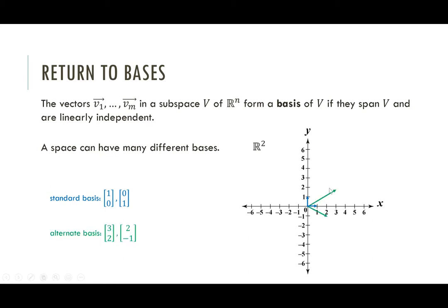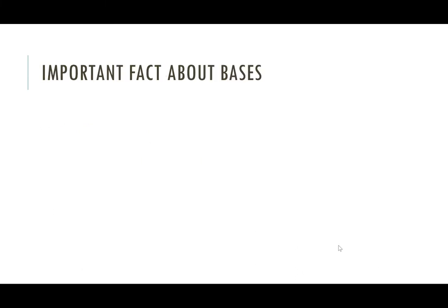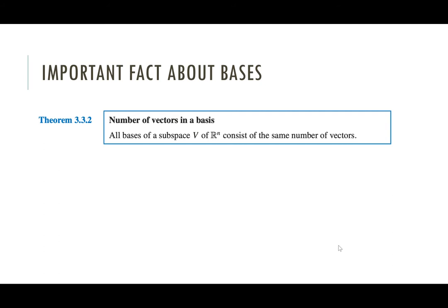So long as you have two vectors that are independent from each other — not pointing in the same direction — you can use these to get any other point in R^2 by taking linear combinations. So the basis of a space isn't unique. However, here's an important fact: the number of vectors in a basis is the same no matter what your basis is.